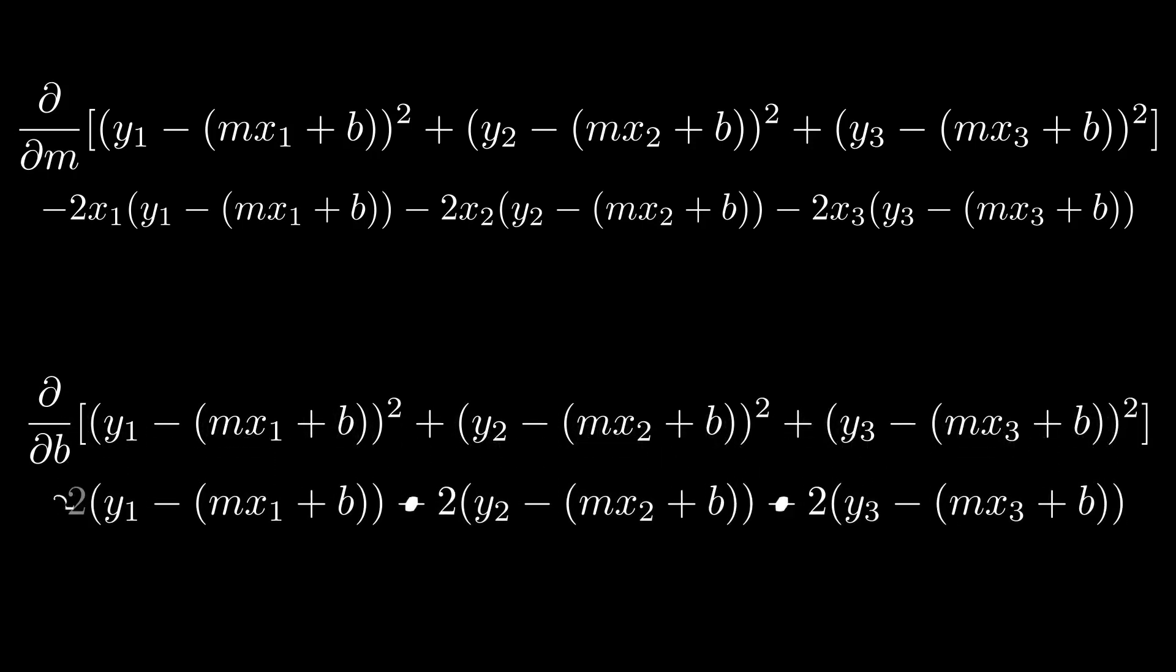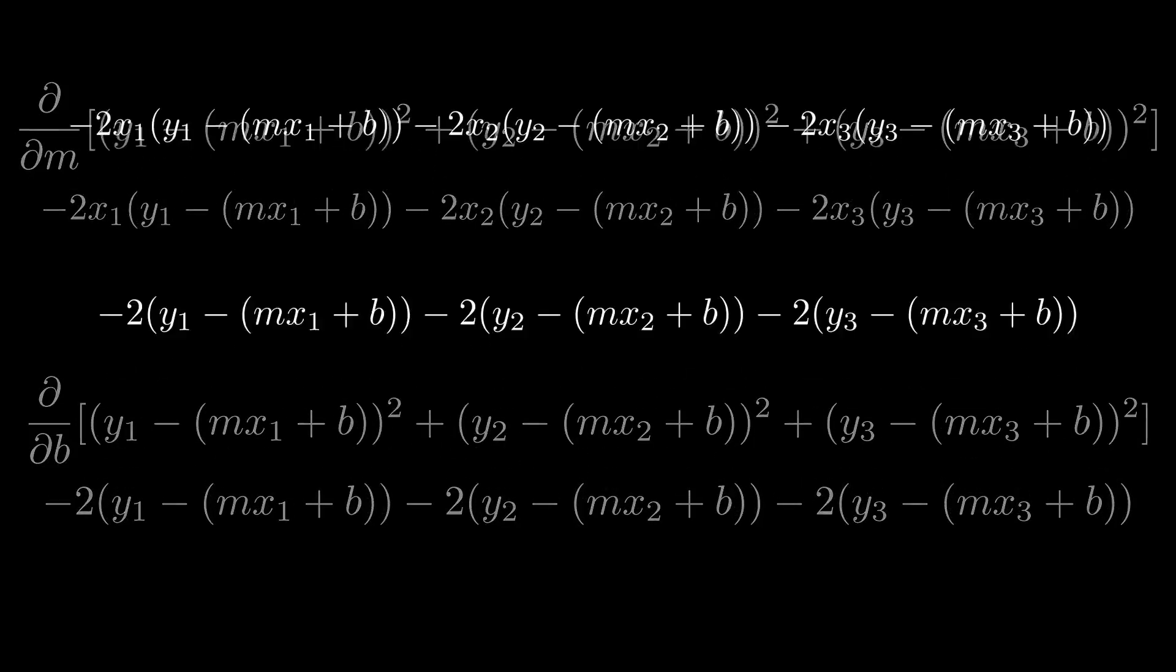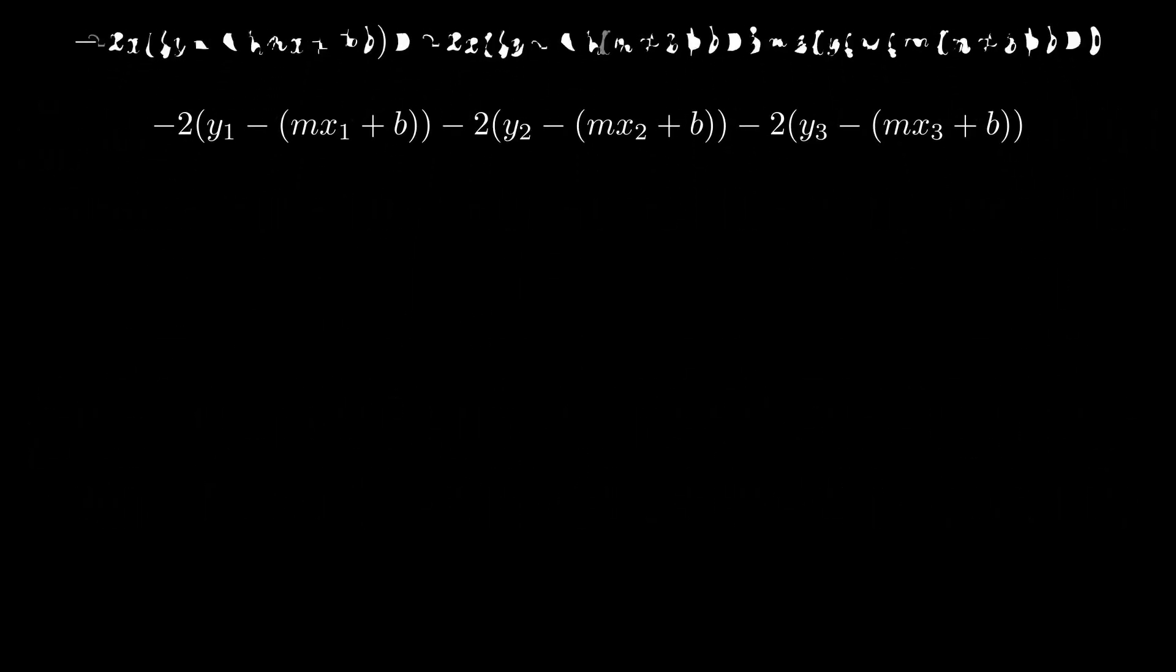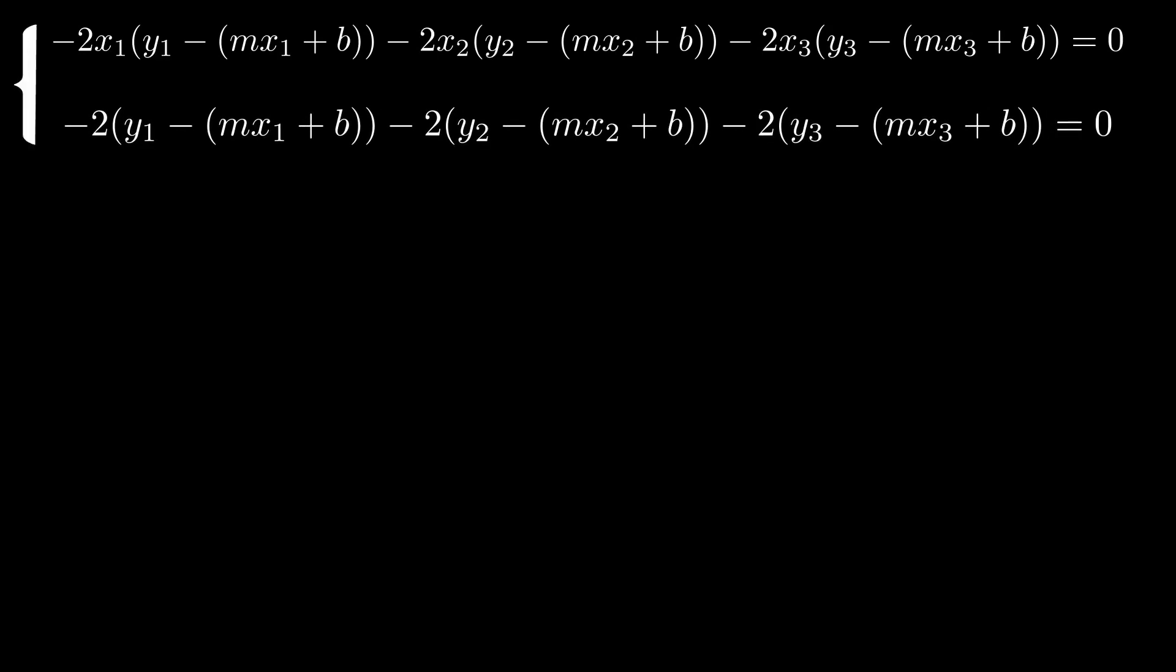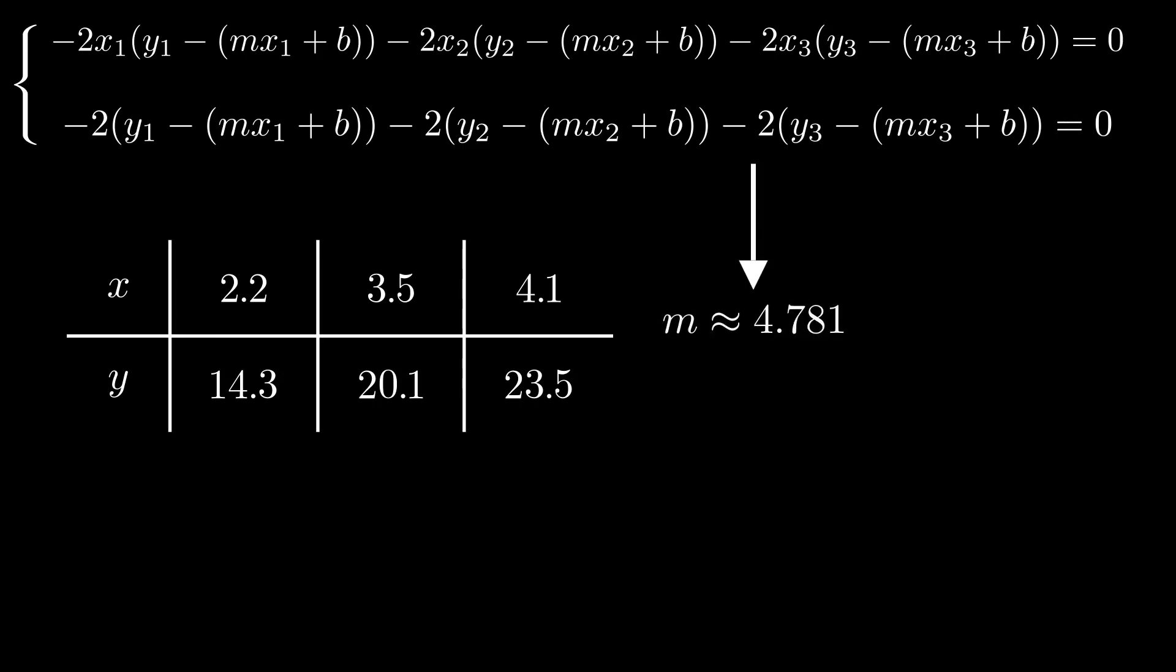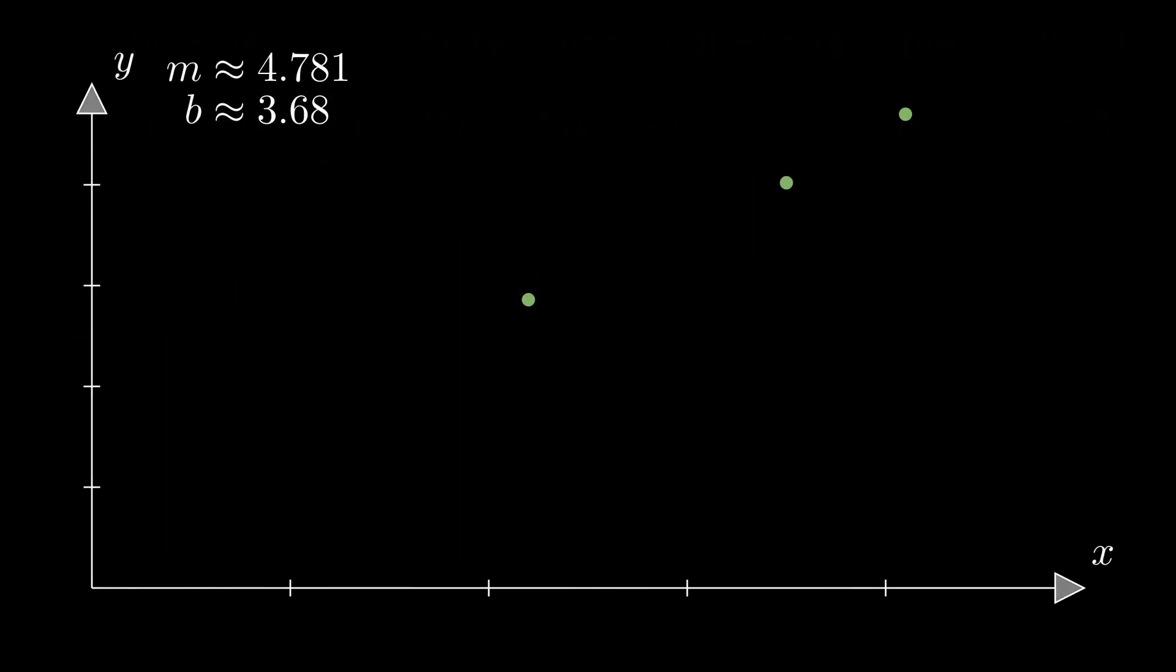Now that we have our two partial derivatives, we can set each one equal to zero like you would for a normal derivative and solve for each variable using various substitution methods for a system of equations. Now that we have done this, we know that the error function has a minimum where the slope is equal to 4.781 and the y-intercept is equal to 3.68. When we graph our line of best fit, it turns out that it fits the data perfectly.